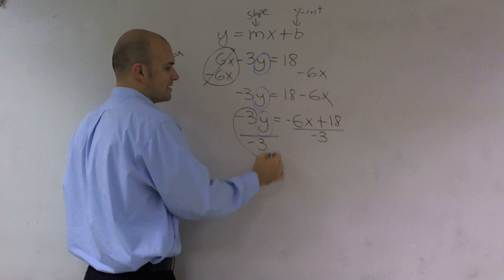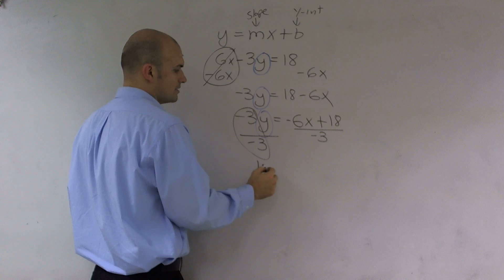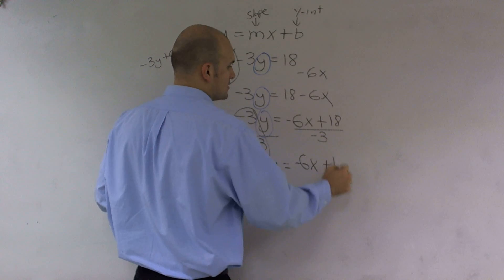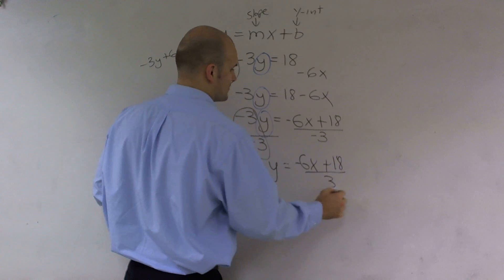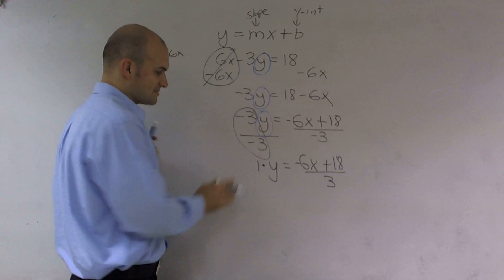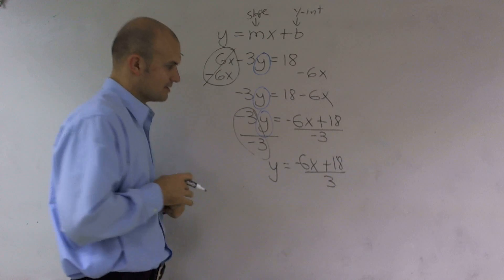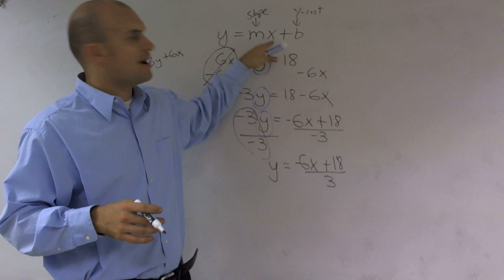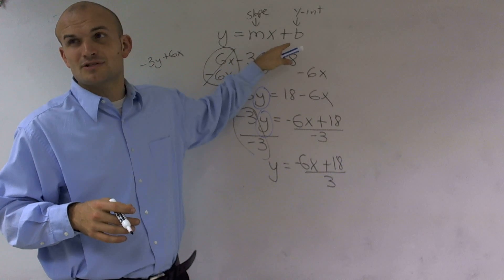Well, negative 3 divided by negative 3 is going to give me 1 times y equals negative 6x plus 18 divided by 3. Obviously, 1 times any number is just going to be equal to that number. And then what I can do - y equals mx plus b form is not a rational equation.